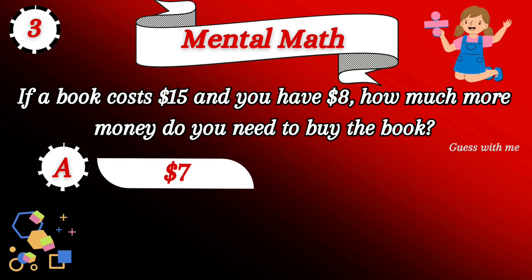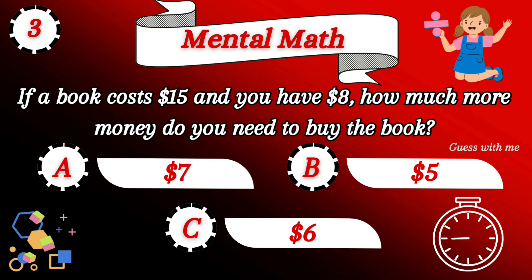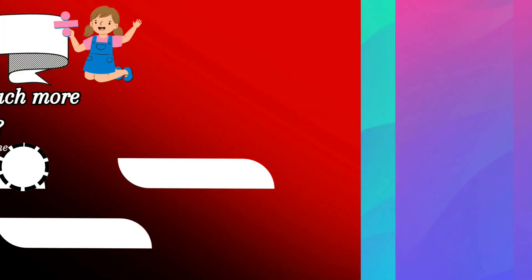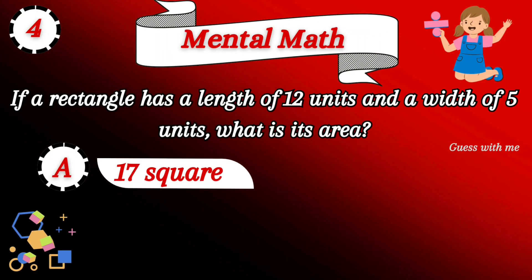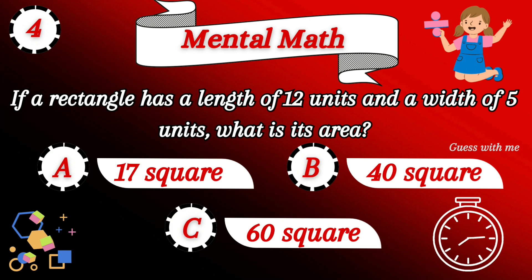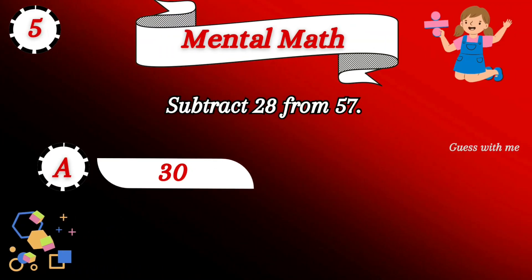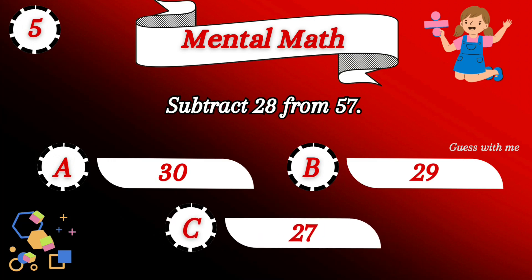Here is the third question for you — take this challenge. Option A is the answer. Try to take this mental math challenge. Option C is your answer for question number five: subtract 28 from 57.